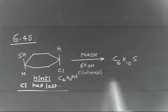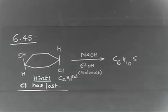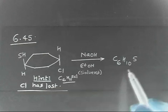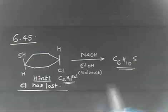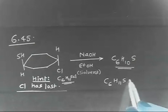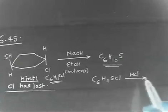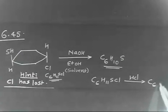If you look here, you see, 1 hydrogen is lost and 1 chlorine is lost. If you compare these two formulas, the initial formula is C6H11SCl. And now, if you release HCl, you will get this formula. That is, C6H10S is what we're getting.